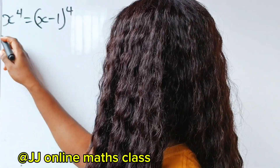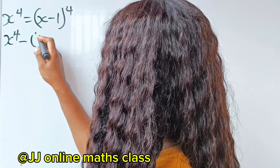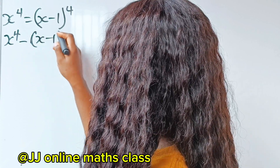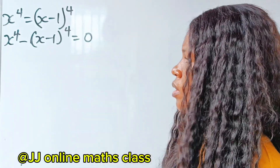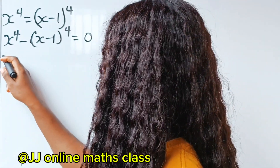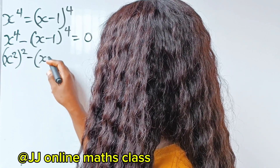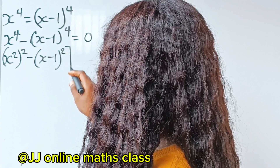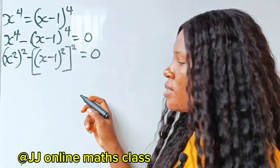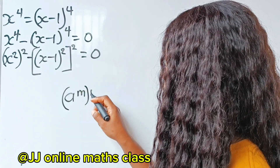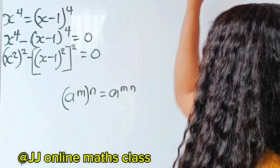The first thing we need to do is bring the terms together. When this crosses, it becomes minus x minus 1 to the power of 4, equal to 0. Let's split this as x to the power of 2, raised to the power of 2, minus x minus 1 to the power of 2, raised to the power of 2, equal to 0. This is because a to the power of m raised to the power of n equals a to the power of m times n.